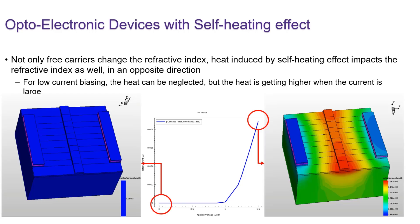It is obvious that at zero bias, the temperature inside the modulator is equal to the ambient temperature, which is 300 K. But when we increase the voltage to 1.0 and 1.5 volts, as you can see here, the lattice temperature is clearly getting higher.